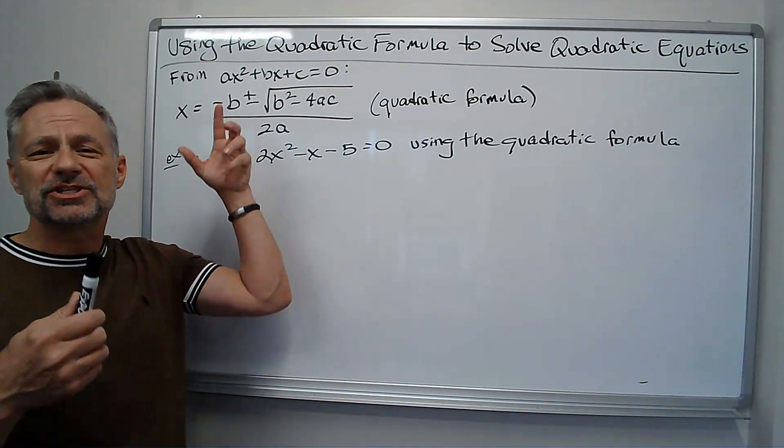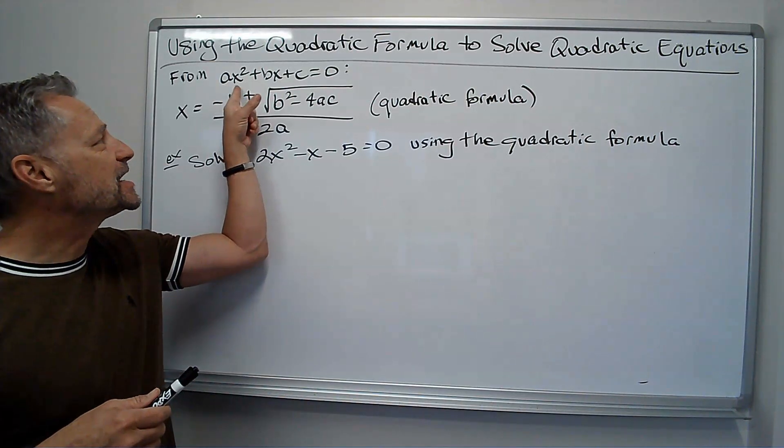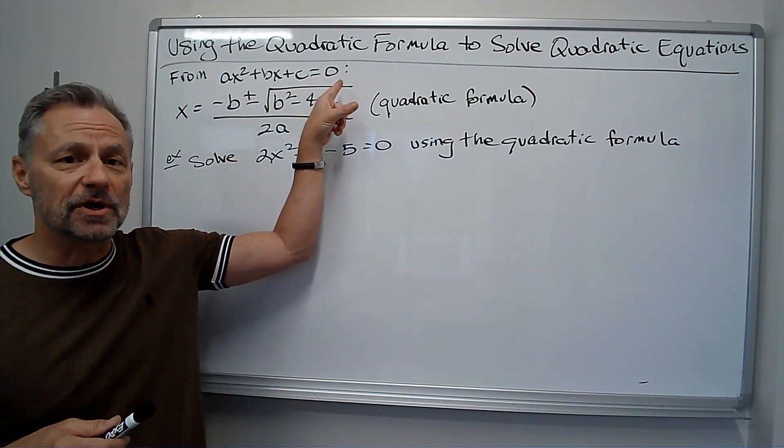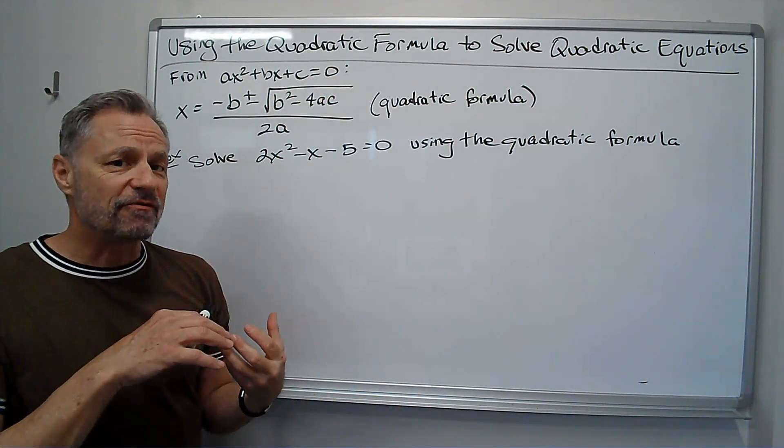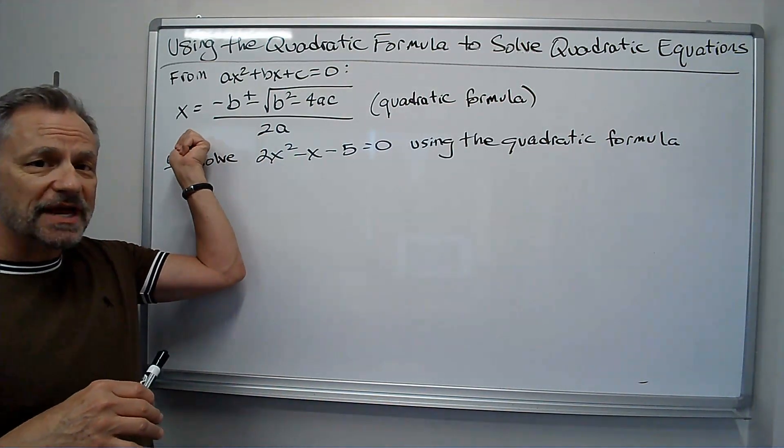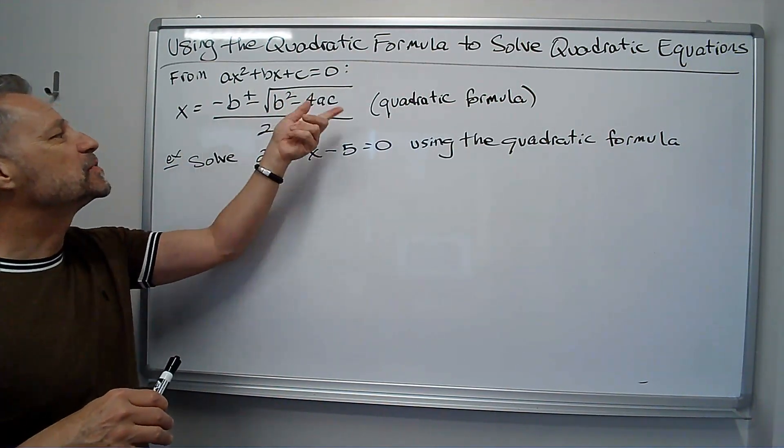Okay, remember the general form of a quadratic equation: ax squared plus bx plus c equals zero. Once I get into that form, the quadratic formula looks like this, x equals this big formula.